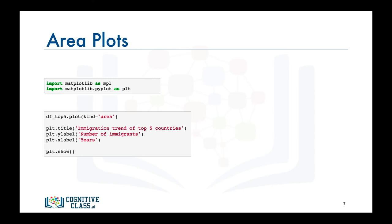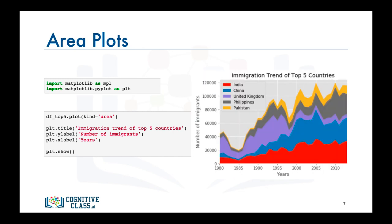Note that here we're generating the area plot using the inline backend. And there you have it — an area plot that depicts the immigration trend of the five countries with the highest immigration to Canada from 1980 to 2013. In the lab session, we explore area plots in more detail, so make sure to complete this module's lab session. And with this, we conclude our video on area plots.